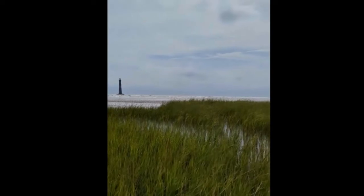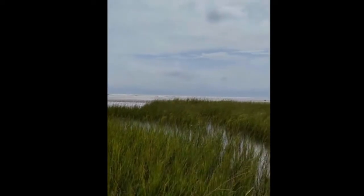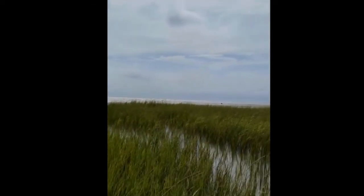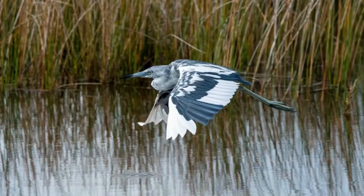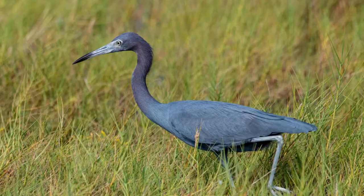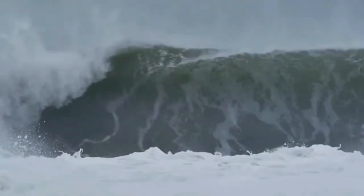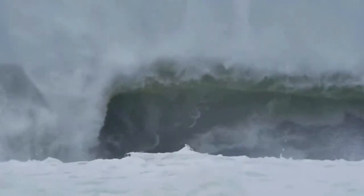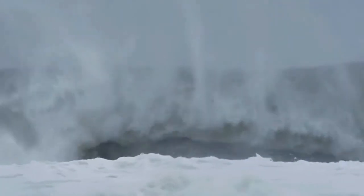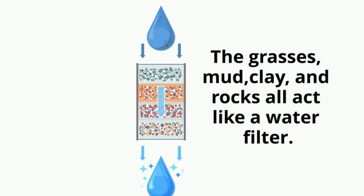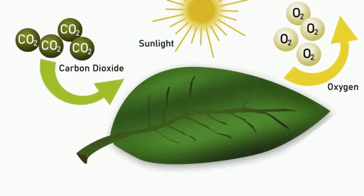Salt marshes are important ecosystems that provide a variety of benefits which include being a habitat for wildlife including birds, fish, and even dolphins, protection from storms and erosion, a great water filtration system, and carbon storage because all the plants take in carbon dioxide and release oxygen during photosynthesis.